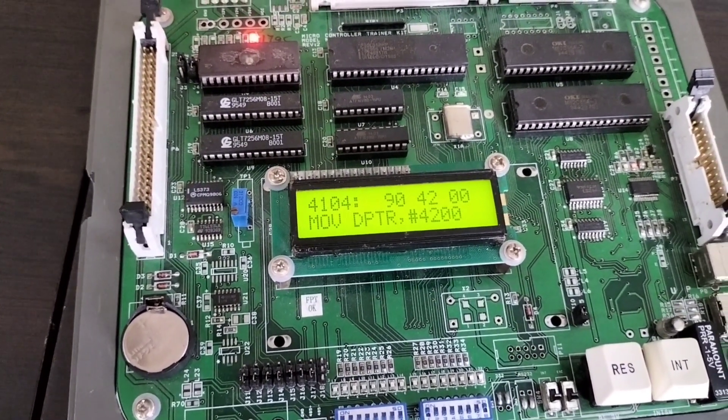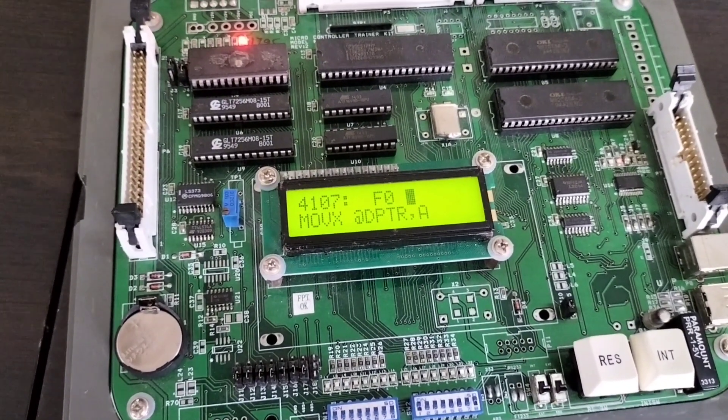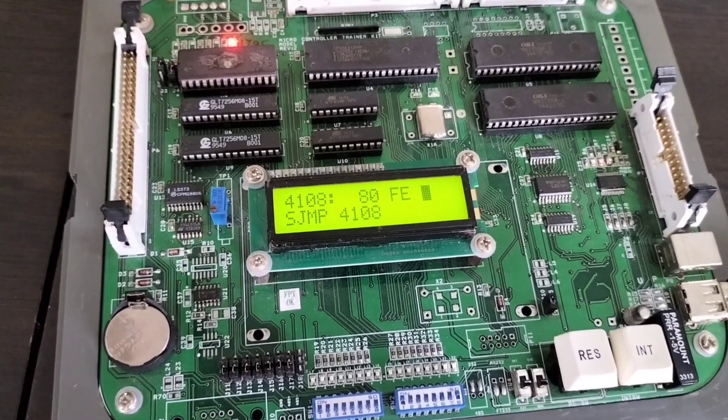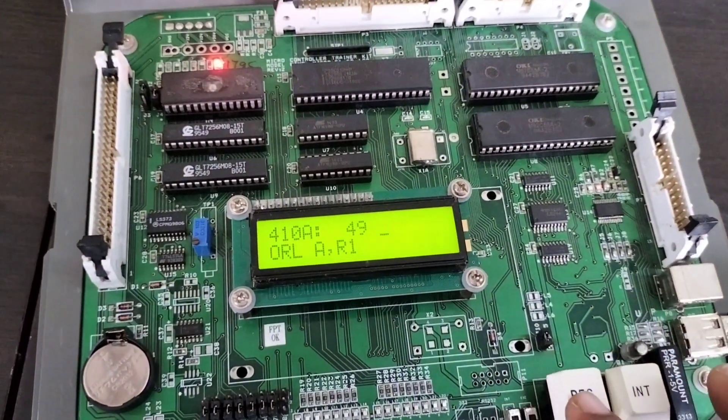Then MOV DPTR, #4200. Again we are moving the accumulated data to DPTR, and then we are giving the SJMP instruction. Now press reset.